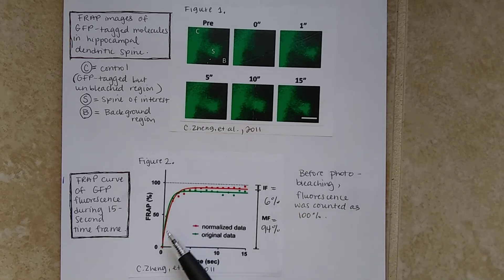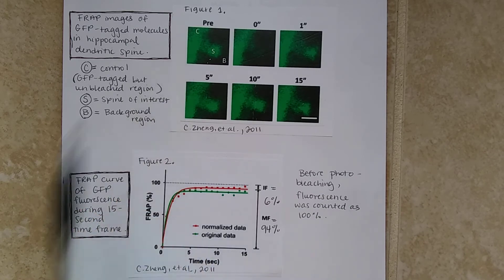So we can see that before photobleaching, the fluorescence was counted as 100%, and after photobleaching, the fluorescence was counted at 94%.